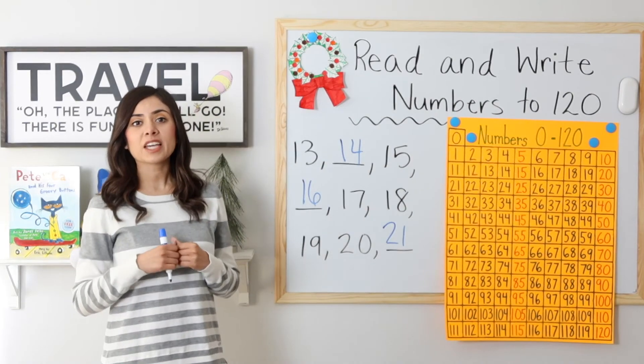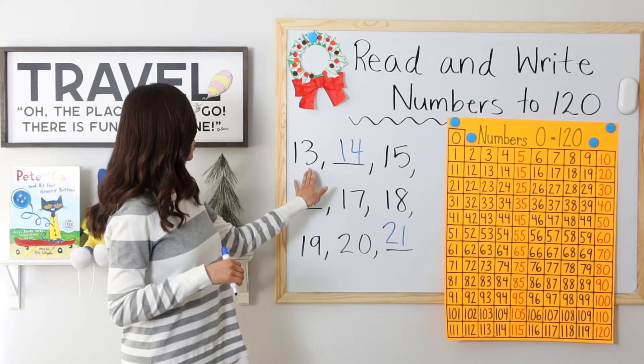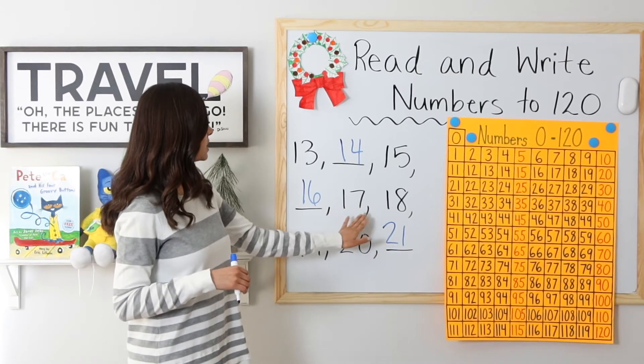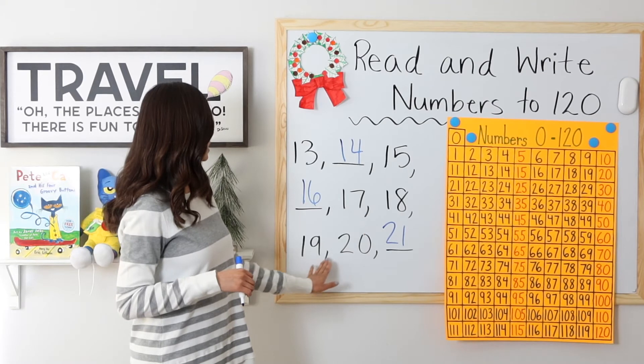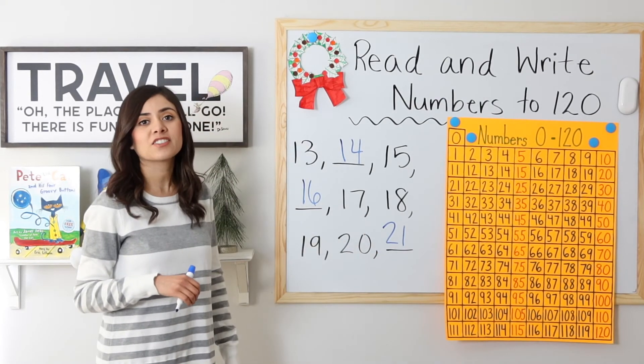So let's go ahead and count these numbers to make sure that we did this correctly. 13, 14, 15, 16, 17, 18, 19, 20, 21. Yep, that's correct. Very good.